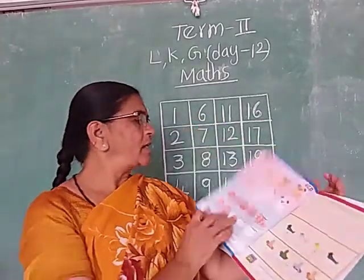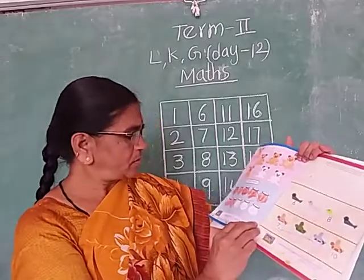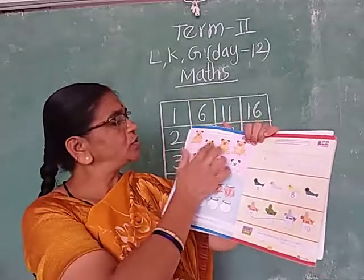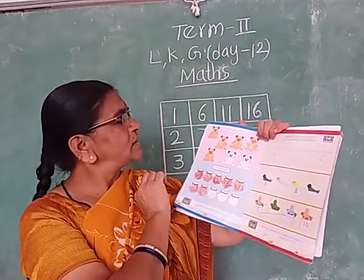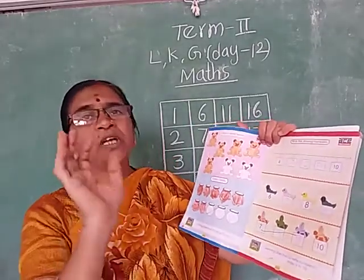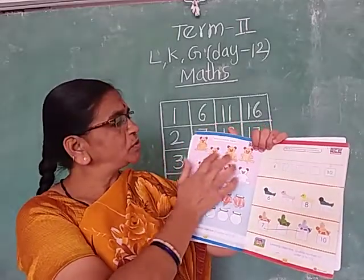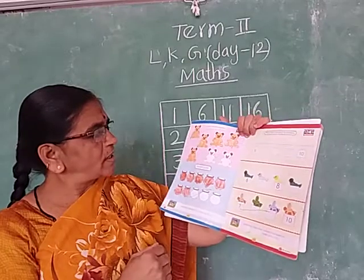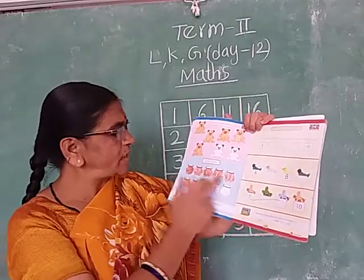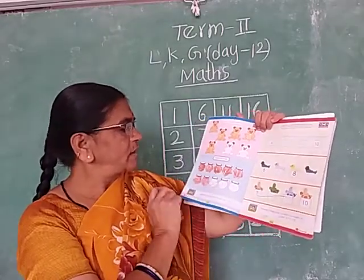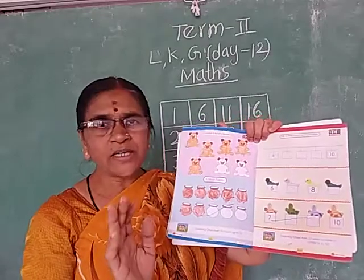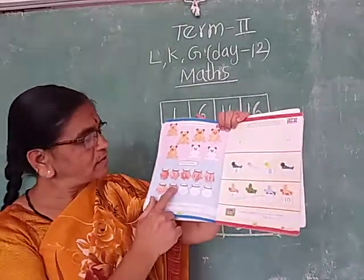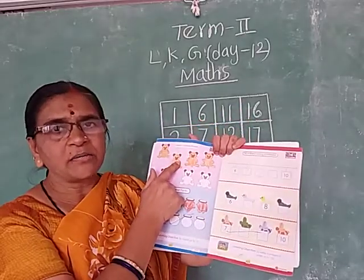Page number 22. Color the teddy bears. How many teddy bears are there total? 1, 2, 3, 4, 5, 6, 7 — 7 teddy bears. But you color only 5 teddy bears. How many pots are there? 1, 2, 3, 4, 5, 6, 7, 8, 9, 10 — 10 pots. But color only 7 pots. Here 7 pots, here 5 teddy bears — color them. This is your homework.